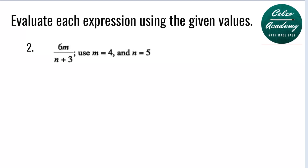The first step is to substitute the values of the variables. 6m means 6 times the m value, which is 4, divided by our n value, which is 5, plus 3.